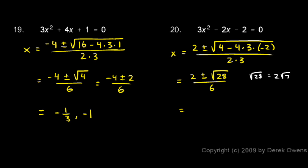So this is equal to 2 plus or minus 2 times the square root of 7, over 6. We can simplify that by dividing the top and the bottom by 2, and we end up with 1 plus or minus the square root of 7 over 3 for our final answers.